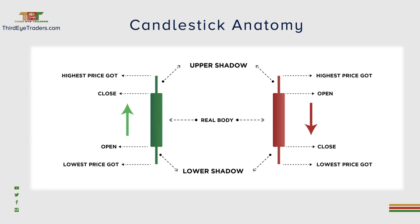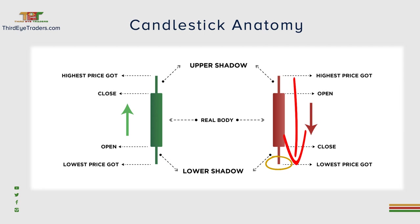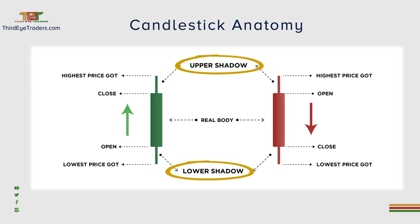Now that we have simplified the bullish candlestick, it's really important to understand the bearish candlestick is the opposite. The open seemed as if it opened at the top, but then it tried to push its way up, forming the highest price, then pushing all the way down to the lowest price prior to closing. The upper shadow and lower shadows are basically the wicks.